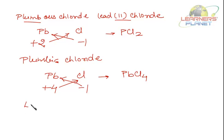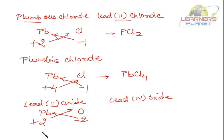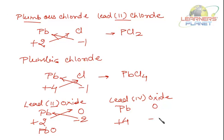Lead also forms two types of oxide: lead 2 oxide and lead 4 oxide. For lead 2 oxide, write Pb and O. Lead 2 means the charge is plus 2 and oxide is minus 2. Cross over the charges and you get PbO. For lead 4 oxide, lead forms plus 4 and oxygen is minus 2. Cross over the charges and you get PbO2.